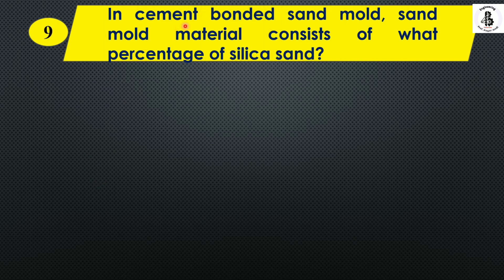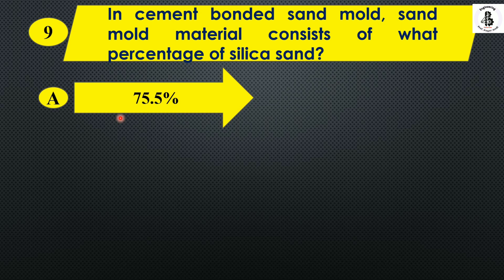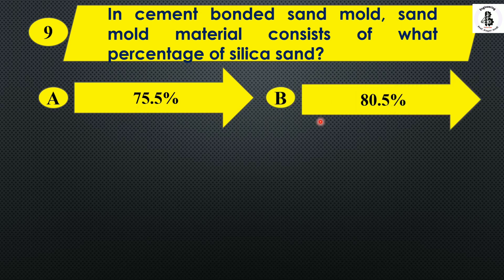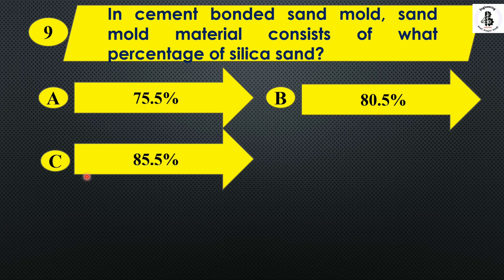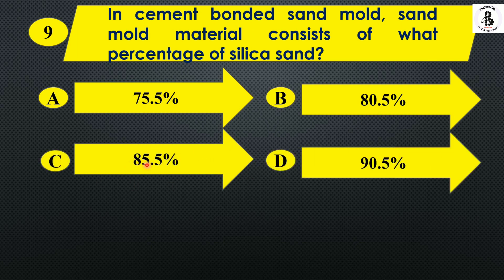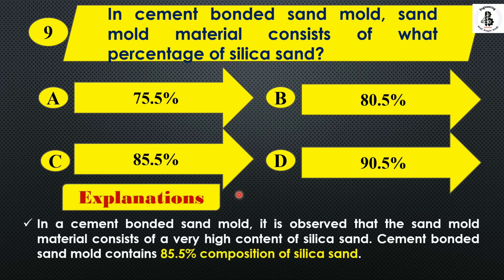Question 8: In a cement-bonded sand mold, the sand mold material consists of what percentage of silica sand? Option A: 75.5%. Option B: 80.5%. Option C: 85.5%. Option D: 90.5%. The percentage of silica is around 85.5% — the cement-bonded sand mold contains a very high content of silica sand at approximately 85.5%. So the right answer is Option C.